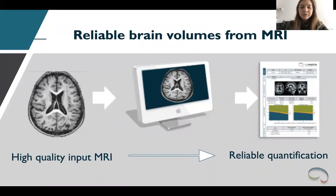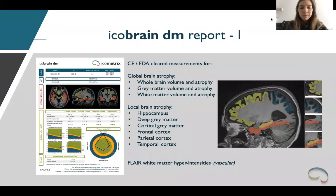Ideally, the input of these automated processes would be high-quality MRI, such as 3D acquisitions, that are compatible with state-of-the-art brain volume quantification solutions, resulting in reliable quantification as an output. The automated volumetric tool IcoBrainDM has FDA-cleared measurements for whole brain, gray matter, white matter, hippocampus, deep gray matter, cortical gray matter, frontal, parietal, and temporal cortex, and white matter hyperintensities from FLAIR images.